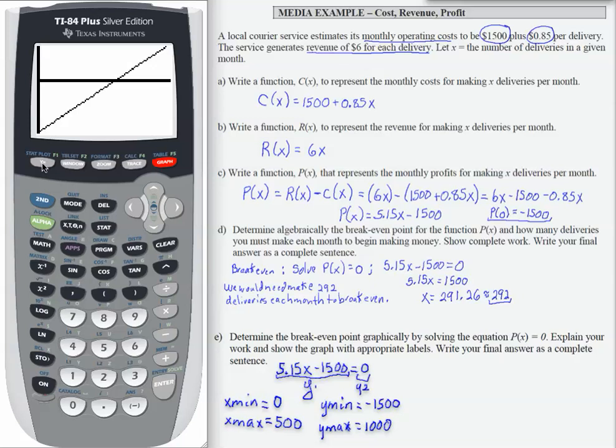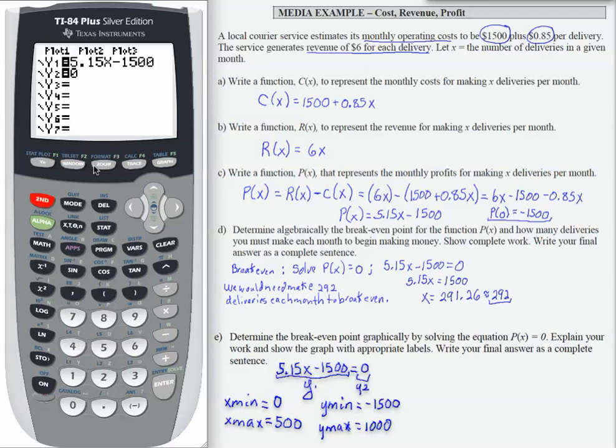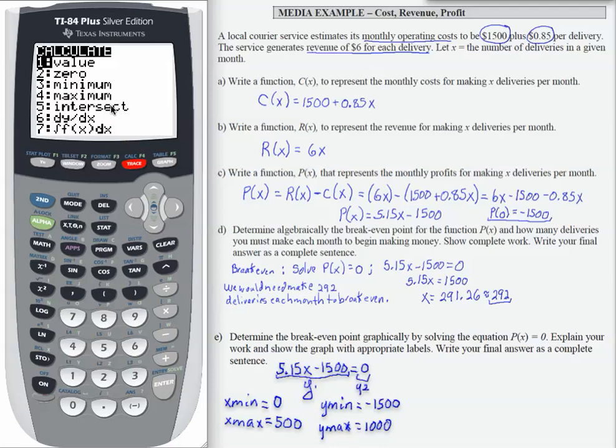To identify the intersection, I'm going to go through the calculate process, second, calculate, and I'm going to work with calculate intersect, which is number 5. Then I'm going to press enter.